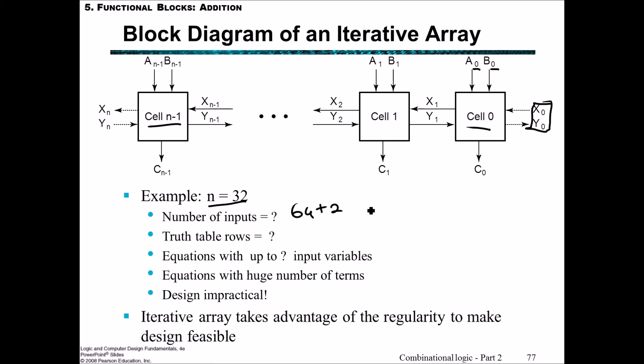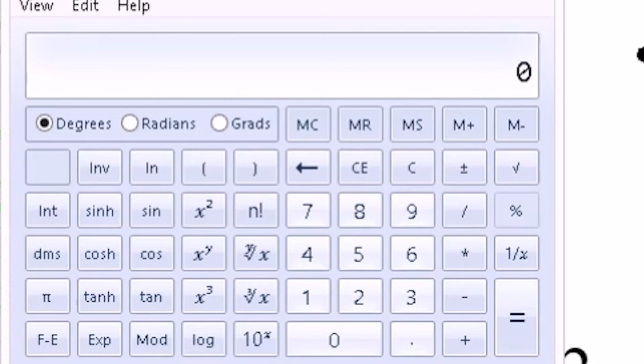How many truth table rows do we need? Each input can be 0 or 1. For one cell with two inputs, we have two possible combinations per input, giving 2^66 lines—a massive number.